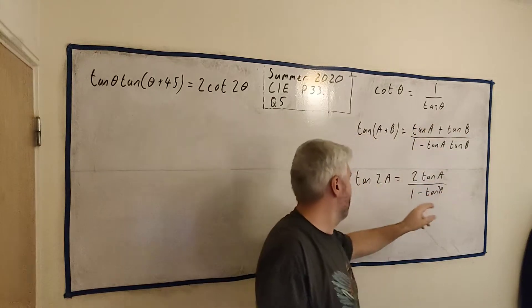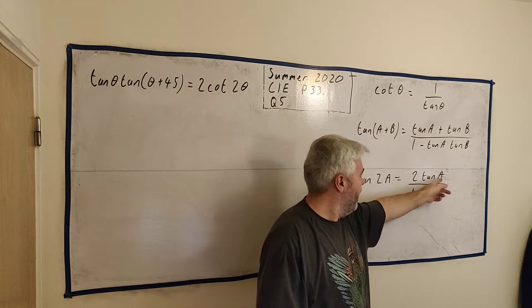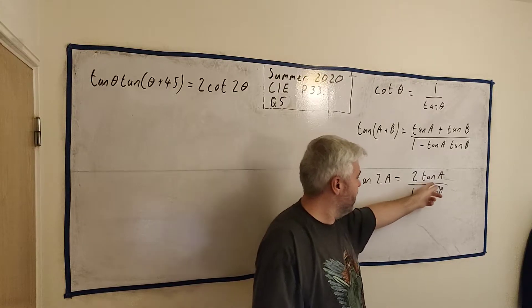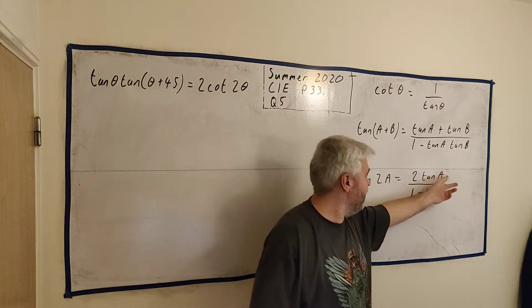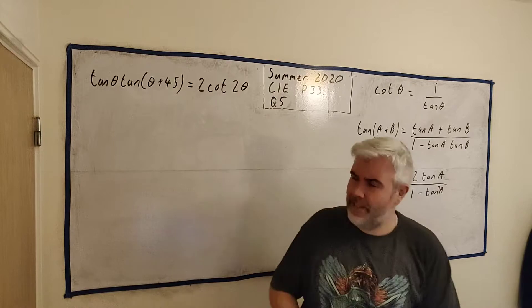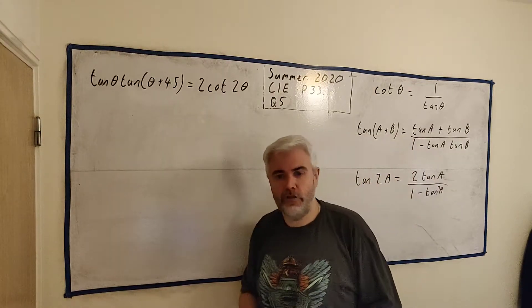And then lastly the cotangent of 2θ if we turn it into a tangent we can then turn a tangent of 2θ into a tangent of 1θ or a single θ. So we're going to use all these on this and hopefully get quadratics to appear so let's get started.